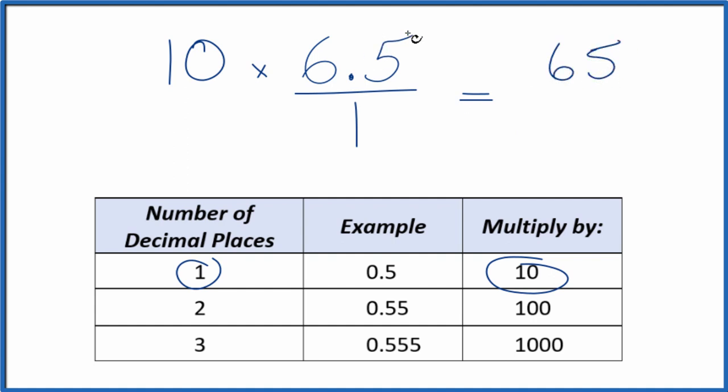But we can't just multiply the numerator. We also need to multiply the denominator by 10. That's because 10 over 10, we're just dividing 10 by 10, it's 1. When we multiply by 1, we don't change the value, just the way it's represented. 10 times 1, that's 10.